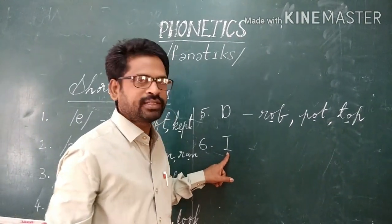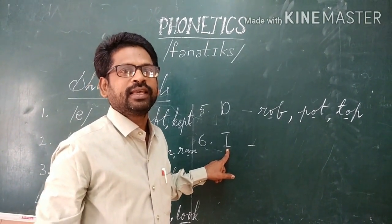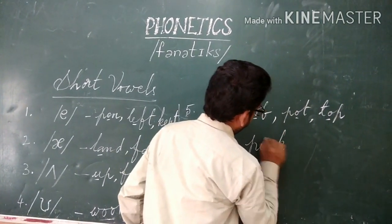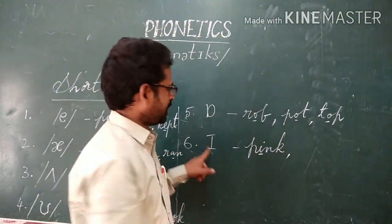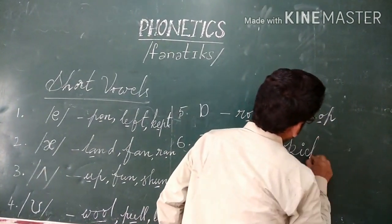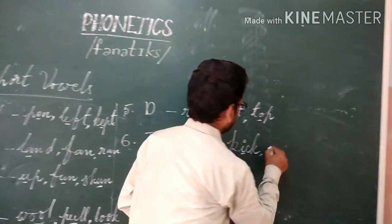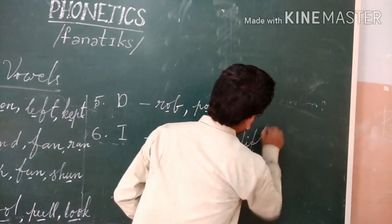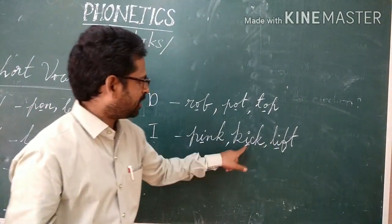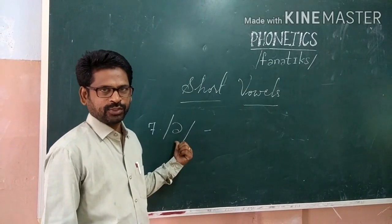The sixth short vowel symbol: examples include P-I-N-K — pink; K-I-C-K — kick; L-I-F-T — lit. Everywhere we give a short sound. This is the sixth short vowel.